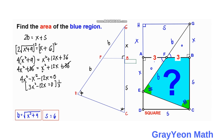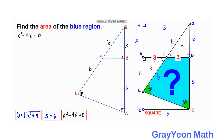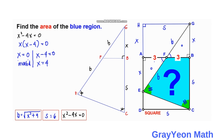Multiplying by one-third gives X² − 4X = 0. Factoring: X(X − 4) = 0, so X = 0 or X = 4. Since X = 0 represents a zero distance and is invalid, the valid answer is X = 4 units.